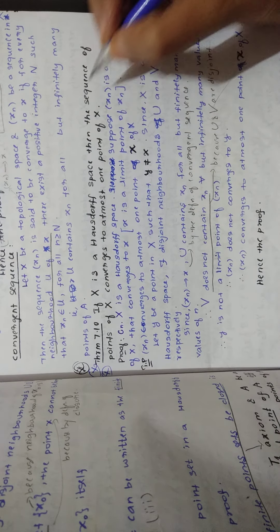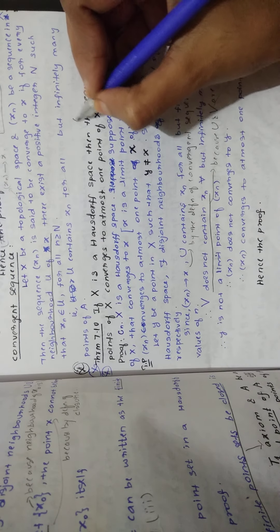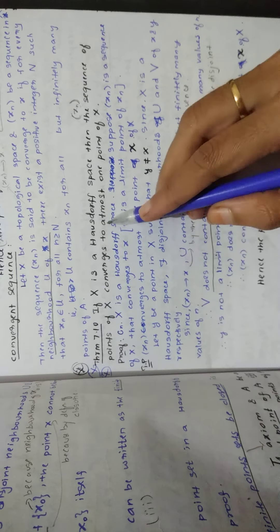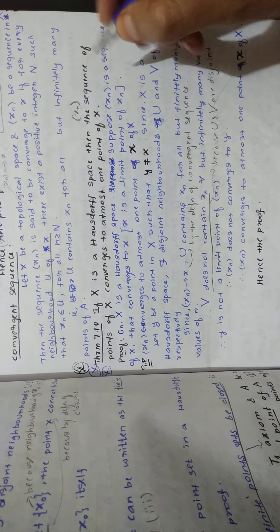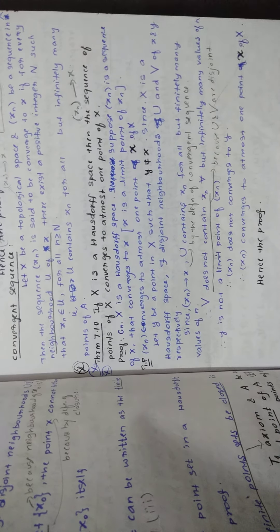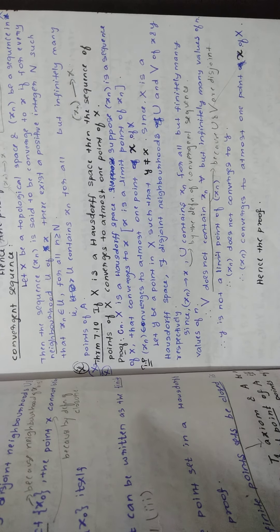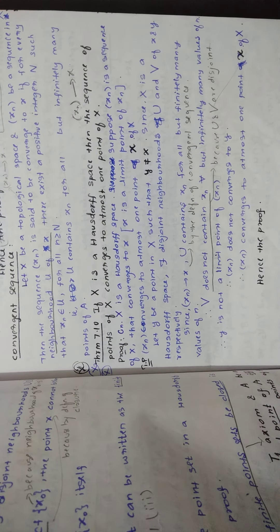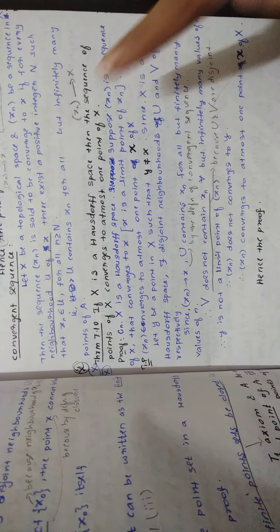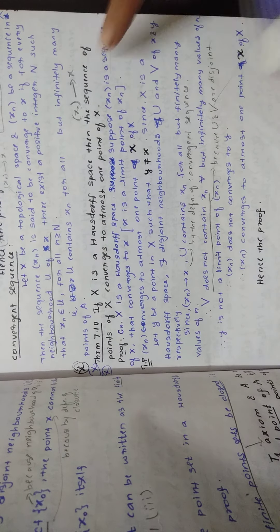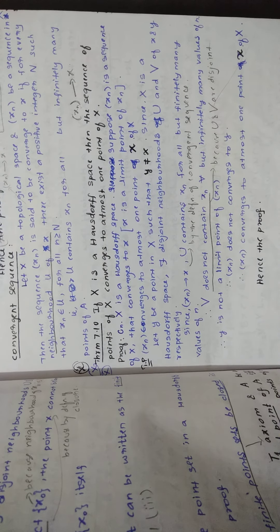Then the sequence of points of X — they are talking about a sequence in X — converges to at most one point of X. We have to prove that the sequence is converging only to one point, small x, and not to any other point. That is the meaning of 'converges to at most one point': the sequence of points of X converges to only one point, x, and not to any other.